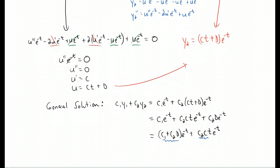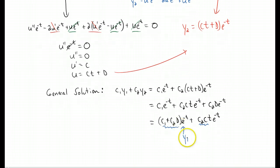So what we have is a constant times y1 plus some other constant times this thing right here. So we may as well have just called that y2 from the very beginning. y1 is e to the negative t, y2 is t e to the negative t.